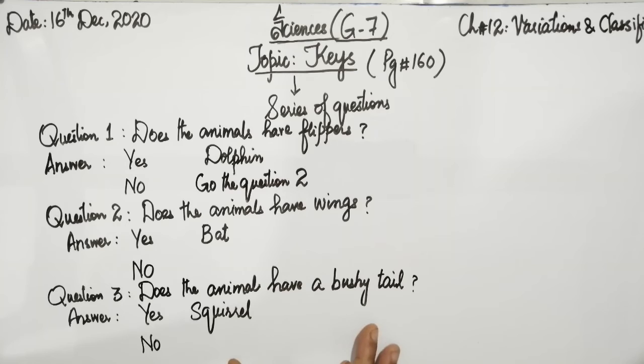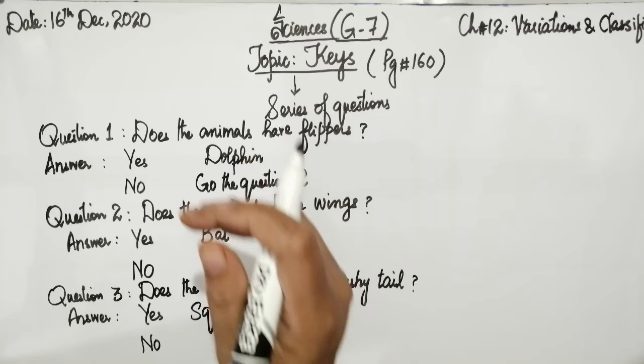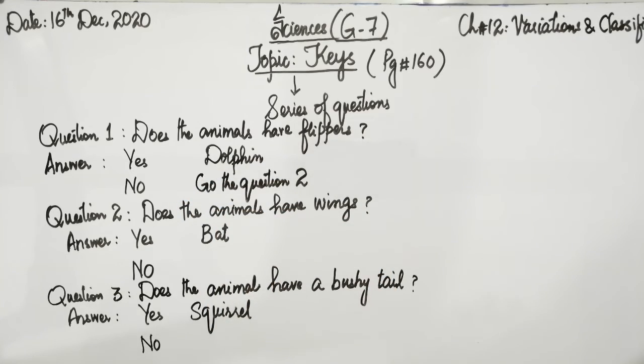It works in just the same way as the one above, but it can be presented in the form of a flow chart. Your last identification is related to that animal that doesn't have a bushy tail, and that is Otter, because Otter's tail is a long tail and is not bushy.